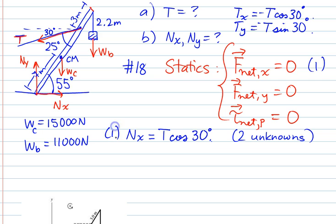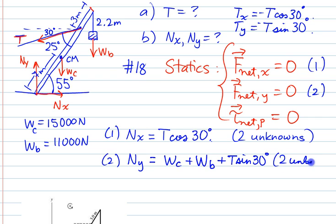Equation two is the net force in the y direction equals zero. The only positive force we have here is N_y, so that must equal all the other negative forces: we have the weight of the crane, the weight of the box, and we also have T sin 30°. That also gives us two unknowns, albeit different ones. We still have tension but now we have N_y, whereas before there's N_x and tension.